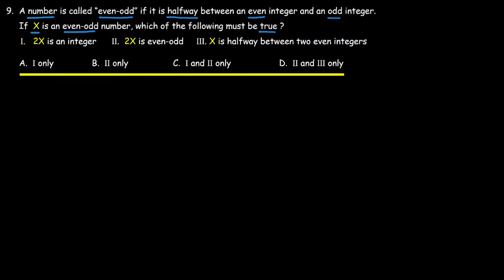What are integers, what are even numbers, what are odd numbers? Integers include: zero, one, two, three, four, five, six, seven, eight, and so on in the positive direction, as well as their negatives: negative one, negative two, negative three, negative four, negative five, negative six, negative seven.